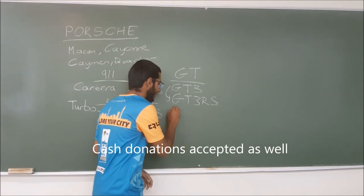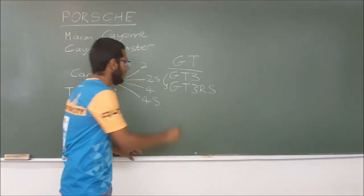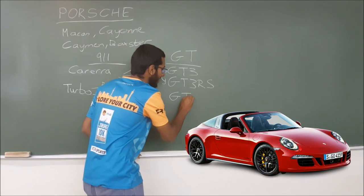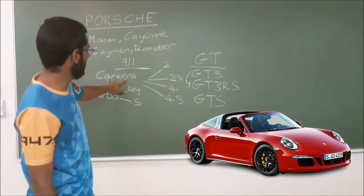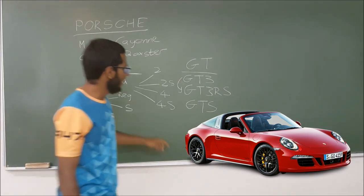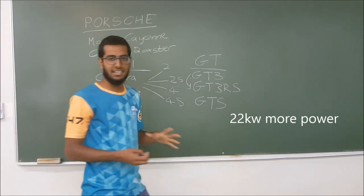Then you have the GTS. Oh sorry, before we got to the GT3 RS, I jumped the gun. You had the GTS which is the baby in the GT range. Basically same engine as the Carrera, 3 litre twin turbo but bigger turbos so they make more power.